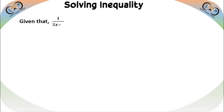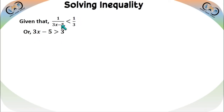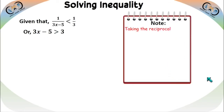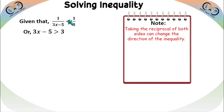Given that 1/(3x−5) < 1/3. From this we can write 3x−5 > 3. Note: taking the reciprocal of both sides changes the direction of the inequality — less than becomes greater than and greater than becomes less than.